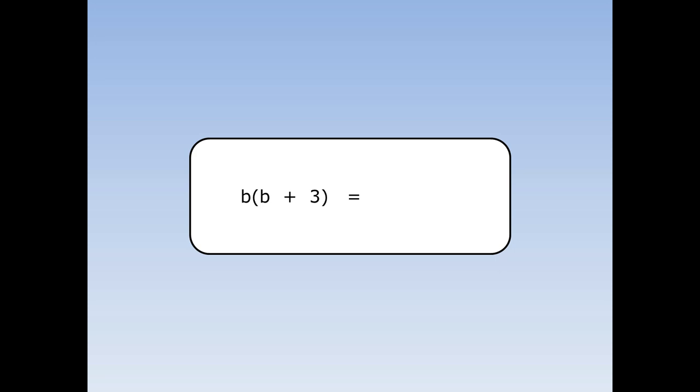We're going to multiply out b bracket b plus 3. The b at the front multiplies everything inside.